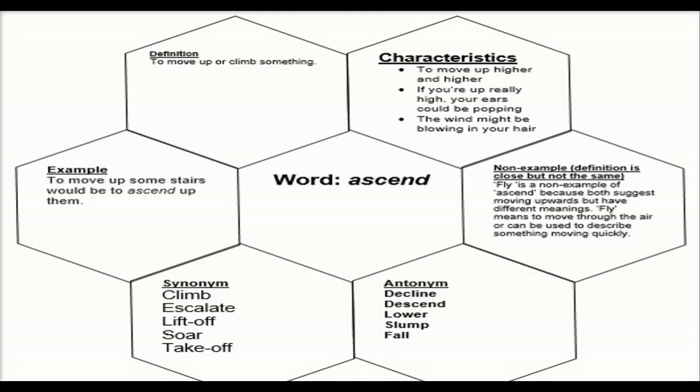Which one in your mind do you get the clearest possible picture? And now we've got our characteristics on our non-example. So our characteristics, they are things that you experience with this word. So we've got to move up higher and higher, you are moving up higher and higher if you ascend.